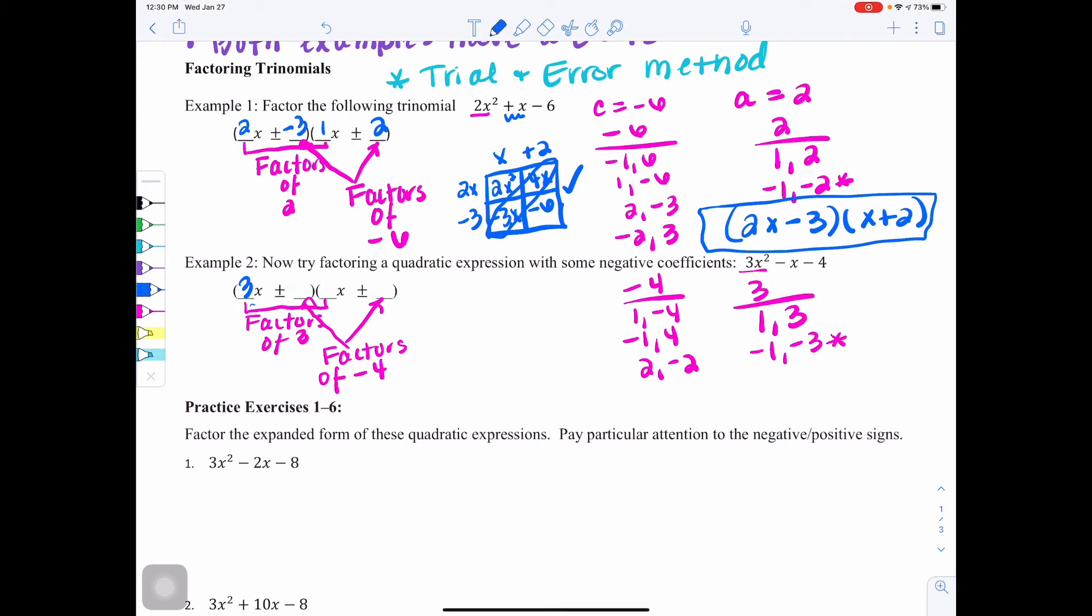I'm going to put negative 4 here and 1 here. 3x times x is 3x squared. 3x times 1 is 3x. Negative 4 times x would be negative 4x. And if I combine those, I do get the negative 1 that I want in the middle.